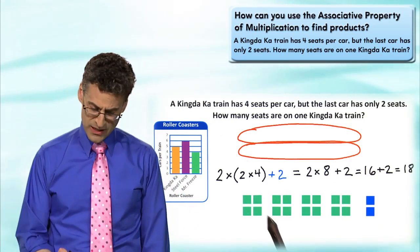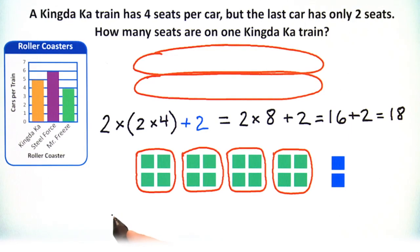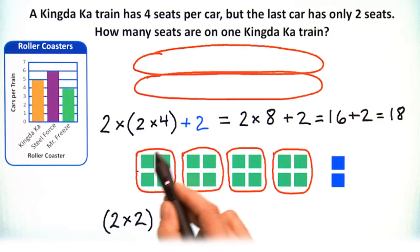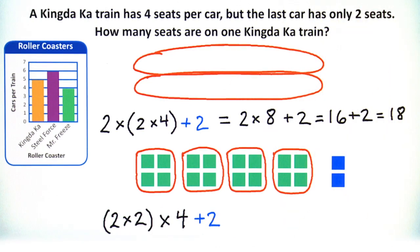Another way of grouping is to look at the cars themselves as little pockets. If I group car by car, in each car I have two times two seats. So I could write this as two times two for each car - and how many cars? One, two, three, four. So I multiply by four. Wait - don't forget the plus two!